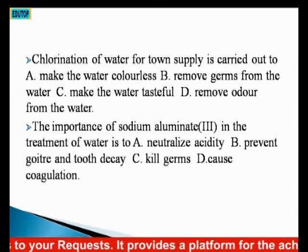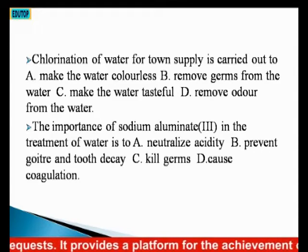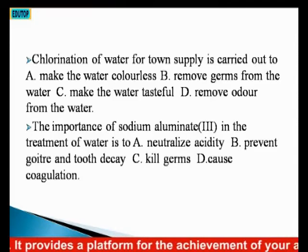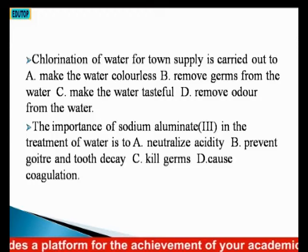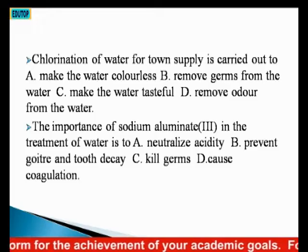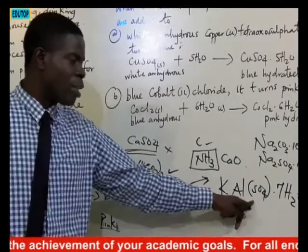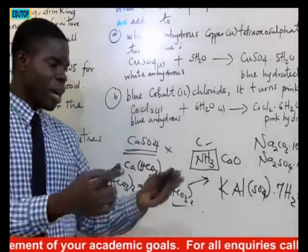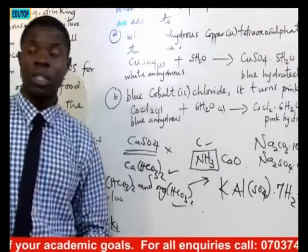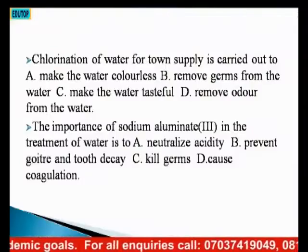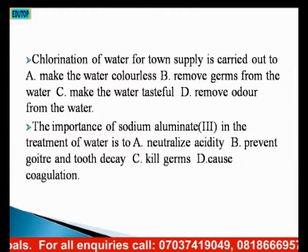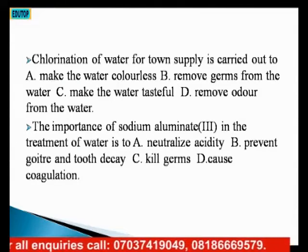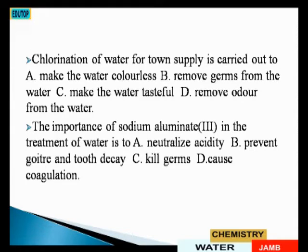Question 10: the importance of sodium aluminate in the treatment of water. Sodium aluminate can be used as a substitute for potassium aluminum sulfate — the one we call alum. The significance of using sodium aluminate is to coagulate the dead particles so they clump together and become heavy, and can then be removed by filtration. Option A: neutralize acidity — no. Option B: prevent goiter and tooth decay — goiter is iodine; tooth decay is fluorine. Option C: kill germs — that's chlorine. Option D: cause coagulation — the answer is D.